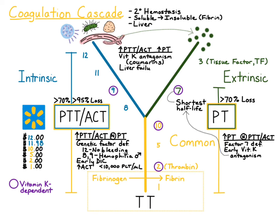Liver failure is another cause for prolonged PT and PTT, and that's because the liver makes most of the coagulation factors, so this is again affecting multiple pathways. Support for liver failure on a serum chemistry would be low glucose or hypoglycemia, low BUN, low albumin or hypoalbuminemia, and low cholesterol or hypocholesterolemia. You would expect to see decreases in one or multiple of these things because the liver also makes all of these substances.